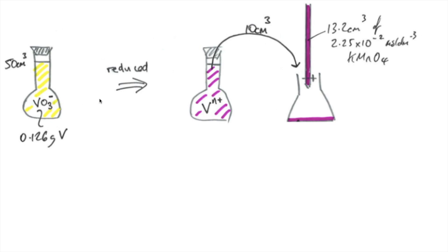They've then taken that and reduced it. They don't specify the reducing agent, and they've reduced it to Vn plus. And obviously we've got to work out the value of n here. So as a process, there's that sequence there. V with the H plus to VO3 minus, going to Vn plus.